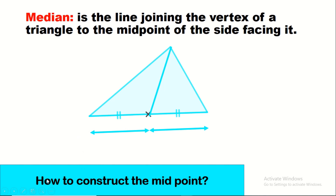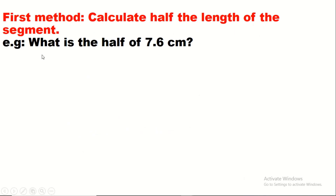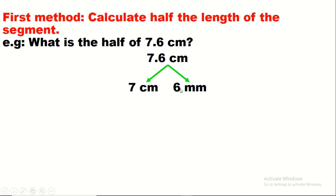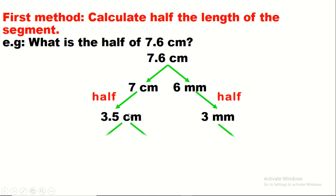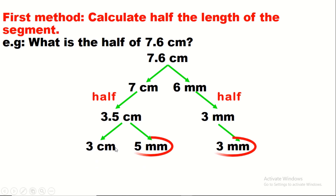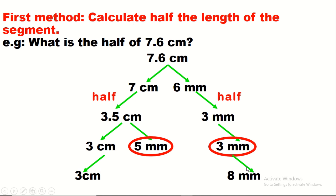To construct the midpoint, let's first use arithmetic. If a side has length 7.6 cm, we need its half. Half of 7 cm is 3.5 cm, and half of 6 mm is 3 mm. Adding 3.5 cm and 3 mm gives 3 cm and 8 mm, so the midpoint is at 3.8 cm. Therefore, half of 7.6 cm is 3.8 cm.